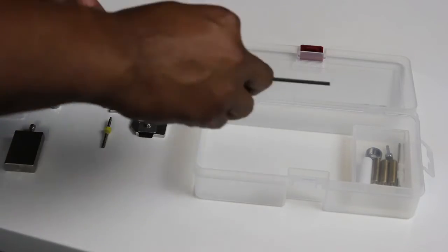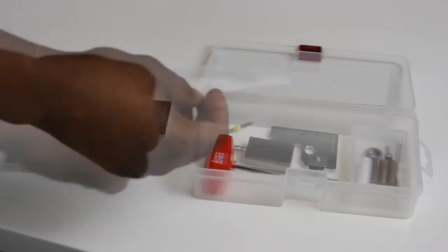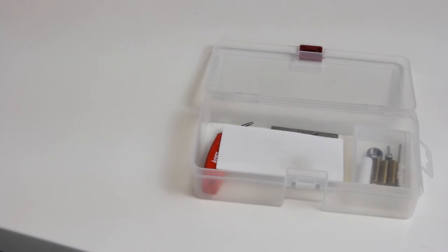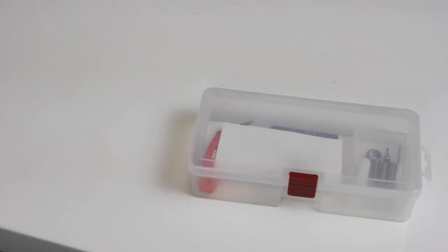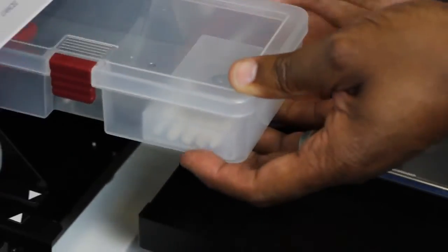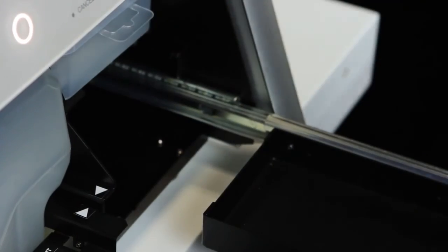After you have successfully removed the automatic correction accessories from your DWX mill, place them in the large storage case and place the large storage case back on the shelf in the bottom cover.